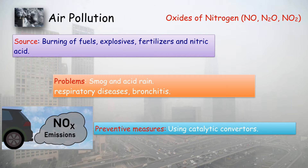As mentioned, nitrogen and oxygen can combine only at high temperatures, so the solution is to avoid high temperatures — even in your engine, your stove, or any combustion process. We can operate at a lower temperature to avoid the formation of oxides of nitrogen, and that can be done using a catalytic converter.